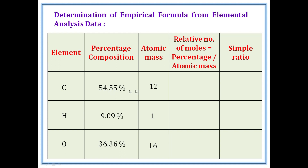54.55 divided by 12 gives us the relative number of moles of carbon in this compound. For hydrogen, 9.09 divided by 1 — anything divided by 1 equals the same number — so 9.09 is the number of moles of hydrogen per 100 grams. Next, oxygen: 36.36 divided by 16.